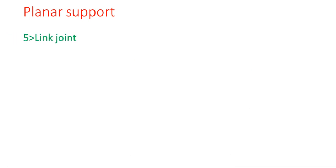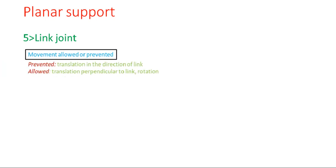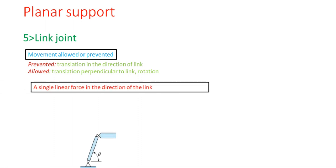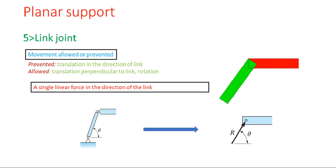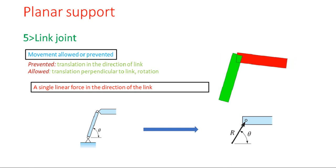The next one is the link joint. Jointed bodies are connected to manage force and movement. In a link joint, translation is allowed only perpendicular to the link and restricted in the direction of the link. What is prevented is translation in the direction of the link, and what is allowed is translation perpendicular to the link and rotation. The linkage makes an angle theta with the horizontal, so the resultant force acts at angle theta.